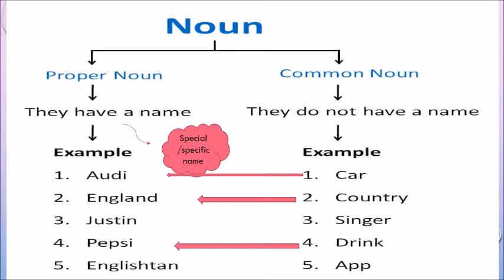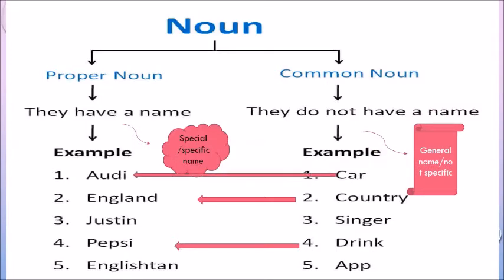Examples of common nouns are: car, country, singer, drink, app. They all name things but do not specifically identify what those things are — they are general, not specific. Car is a common noun, but when I say Audi, that's a proper noun. Country is a common noun, but if I say England, it's a proper noun. Drink — Pepsi. So you are now very clear about common and proper nouns.